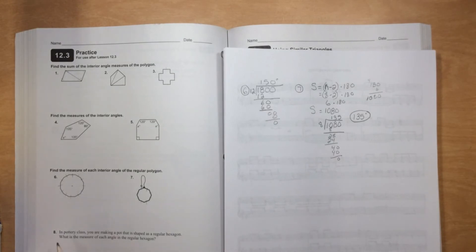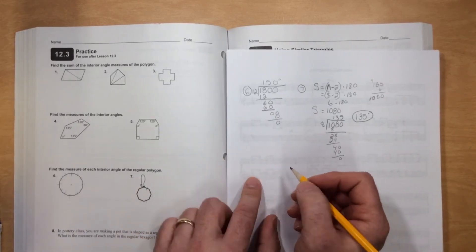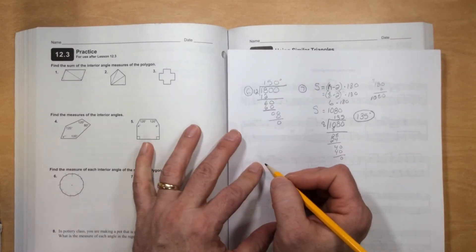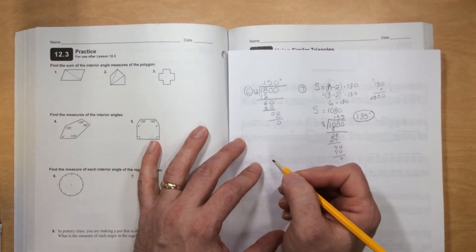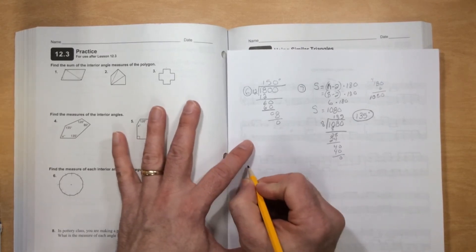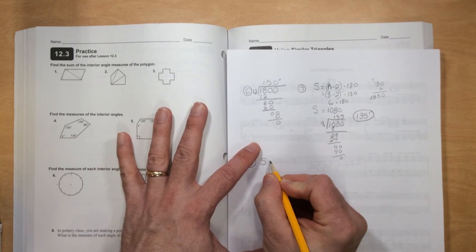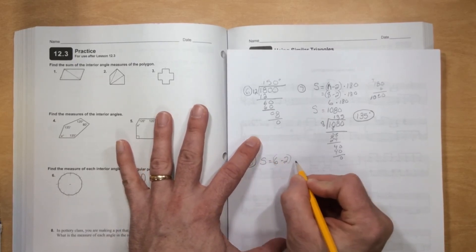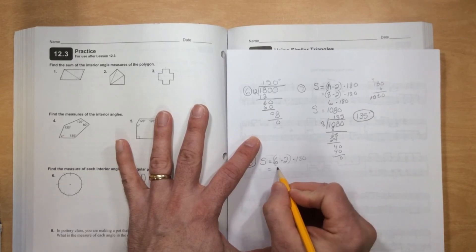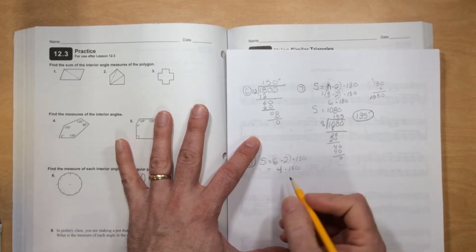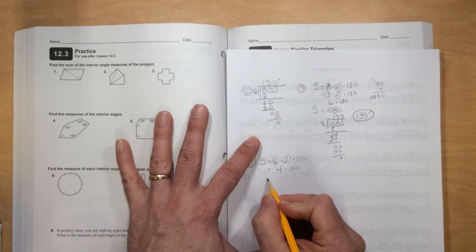And finally, number 8. In pottery class you are making a pot that is shaped as a regular hexagon. Remember, hexagons have six sides. What is the measure of each angle in the regular hexagon? Remember, because these are regular, all of the angles are the same. So for number 8, the sum of the angles will be 6 minus 2 times 180, which is 4 times 180, which is 720.